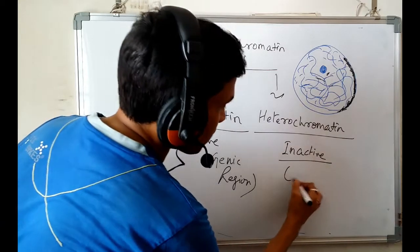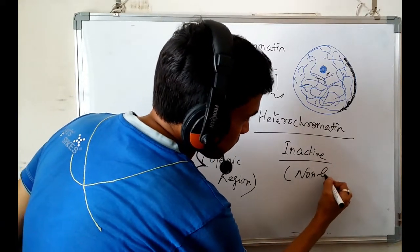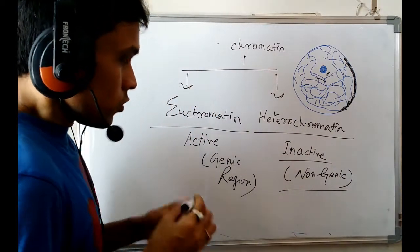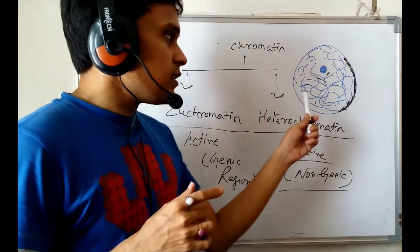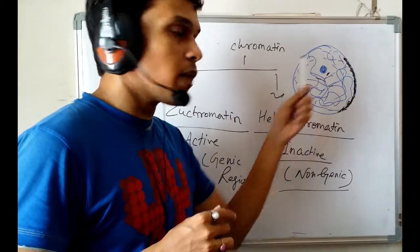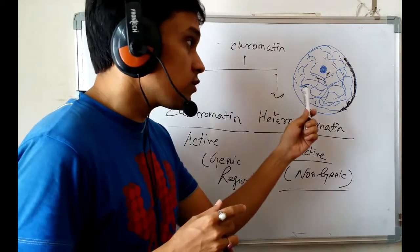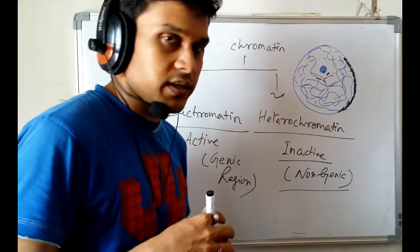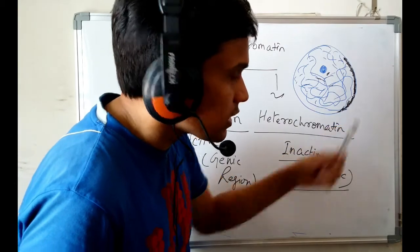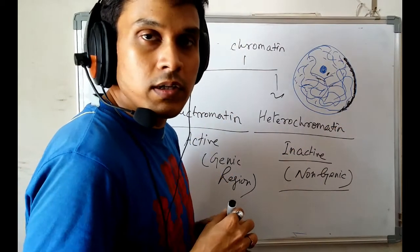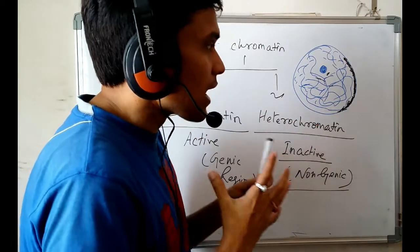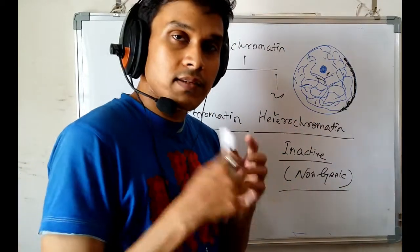Heterochromatin is the non-genic part. As you can understand, euchromatin is lightly stained because it is loosely bound — loosely bound structures retain less stain. Heterochromatin is condensely bound, that is why it is darkly stained, because condensed structures retain more color.